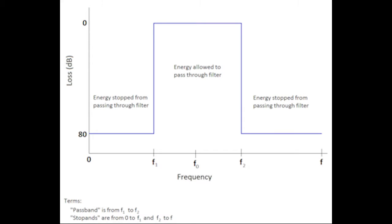The graph shown here is an ideal bandpass filter. The x-axis is frequency and the y-axis is loss in dB. You can see that there are three distinct regions. The region of frequencies from 0 to F1 is considered a stop band — the filter is stopping energy from going through in this region because insertion loss is so high. At 80 dB of loss, there is no energy that's going to go through that filter. Then at F1, you have a cutoff frequency where it cuts off and jumps from the stop band up to the pass band.